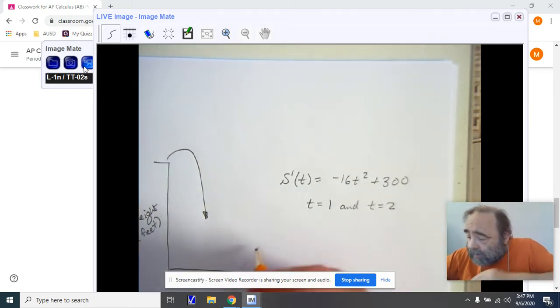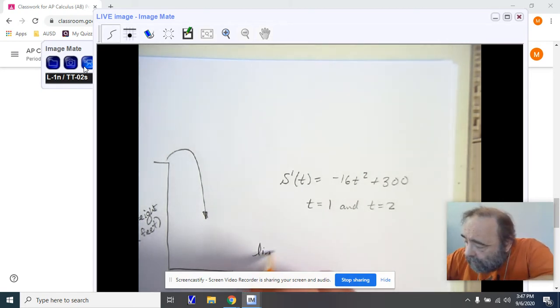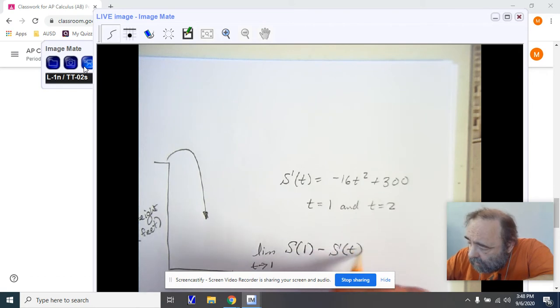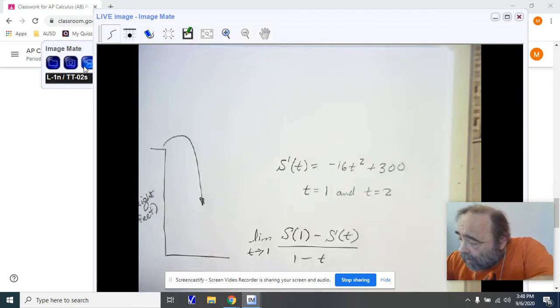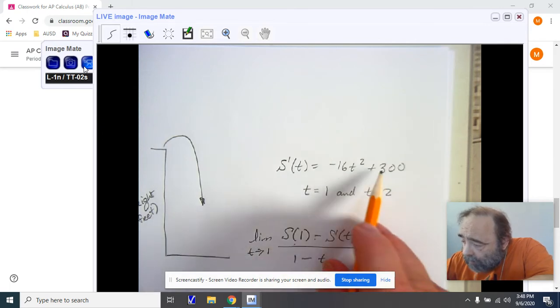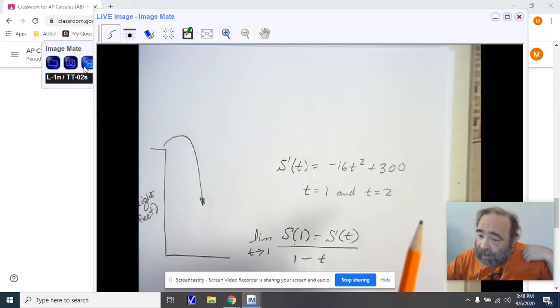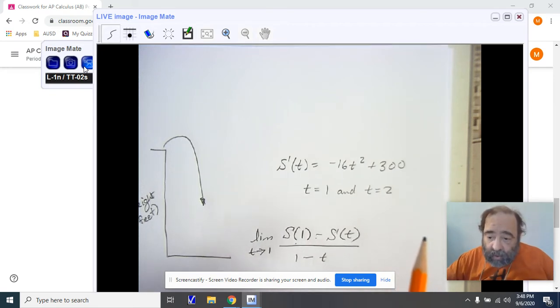Now, we're applying that limit. So we're saying that the limit as t is approaching one for s(1) minus s(t) divided by one minus t. And when we do this, we're going to put our s(t) right here and distribute our negative. We're going to put s(1) right here. And when we put the one in, you'll notice that we're subtracting 16 from 300, and that's going to give me 284.